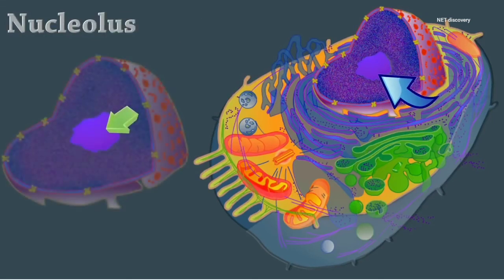The nucleolus is a small, dense body within the nucleus. It's composed of ribosomal RNA and proteins, and it's the site of ribosome subunit manufacture.